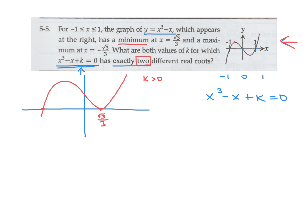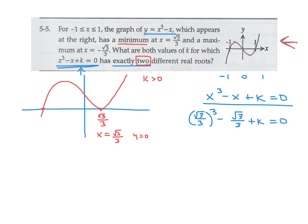When x equals root 3 over 3 and it's a root, y equals zero. So we plug root 3 over 3 into the equation x cubed minus x plus k equals 0 to find the value of k.